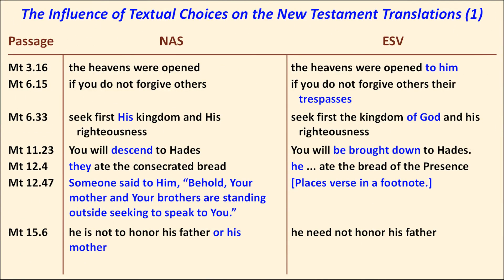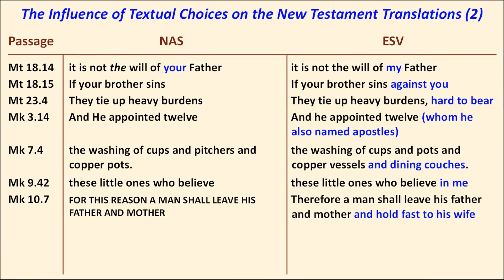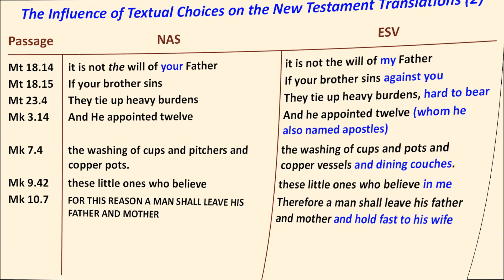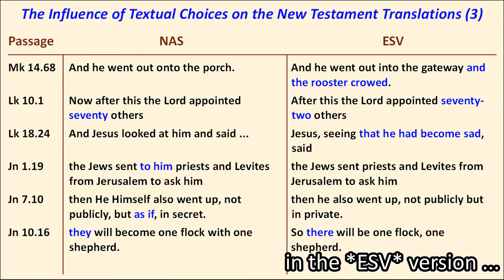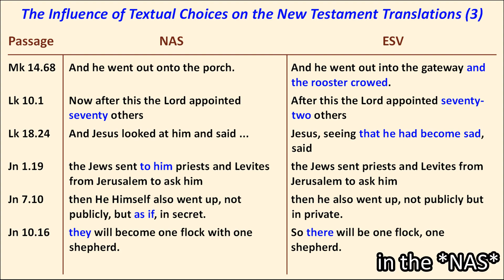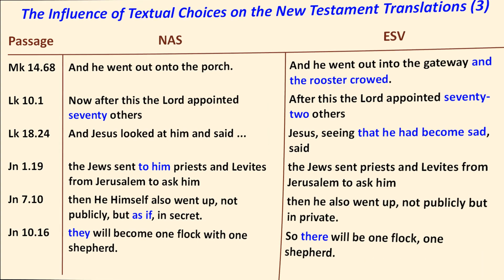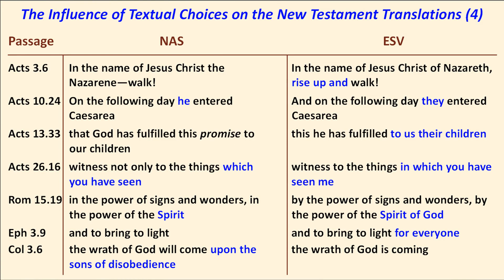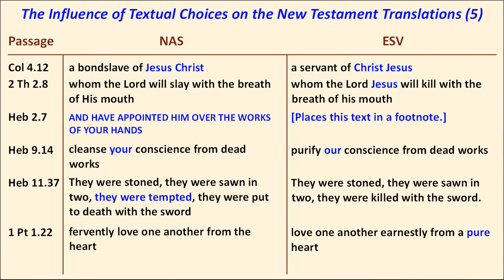The next six charts show interesting differences between the ESV and NAS New Testaments due to their use of different Greek texts. Notable is Matthew 12:47, which the NAS includes in the text while the ESV relegates to a footnote. In Luke 10:1, the NAS has the Lord appointing 72 disciples while the ESV has only 70. In Romans 15:19, the ESV reads 'Spirit of God' like the King James Version, while the NAS has simply 'Spirit.' The inclusion of 'pure' at 1 Peter 1:22 also brings the ESV closer to the KJV.